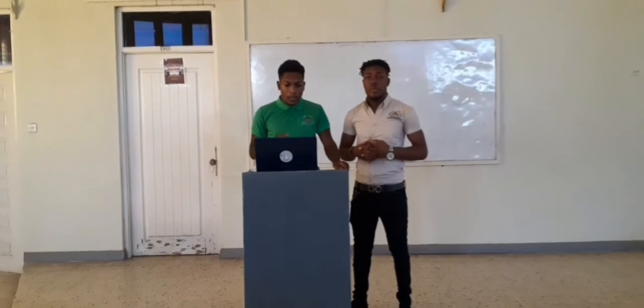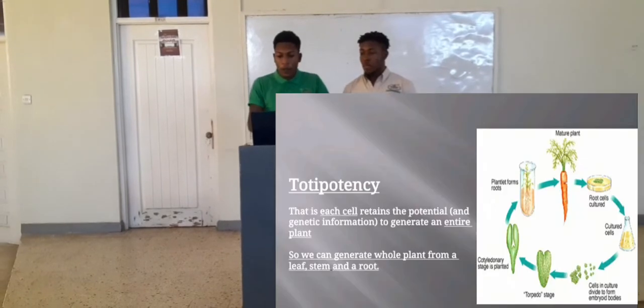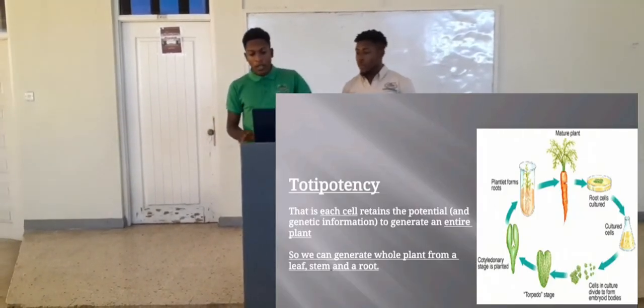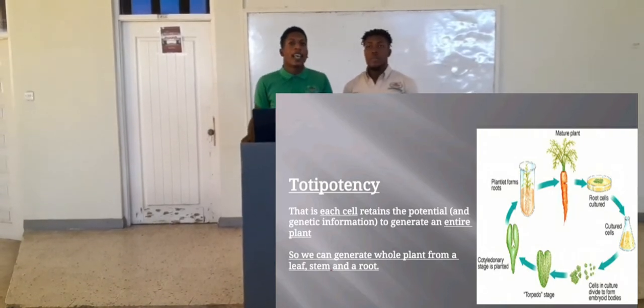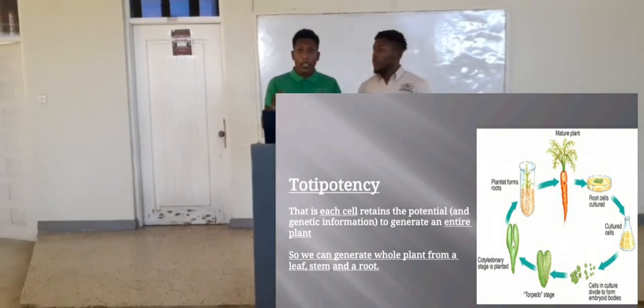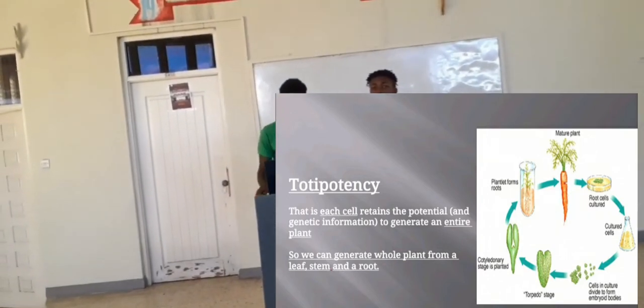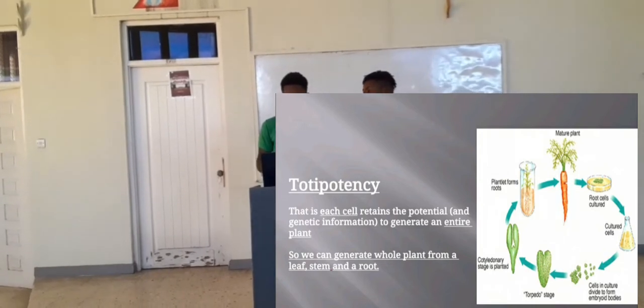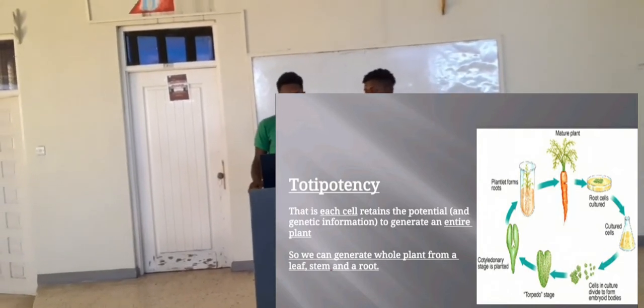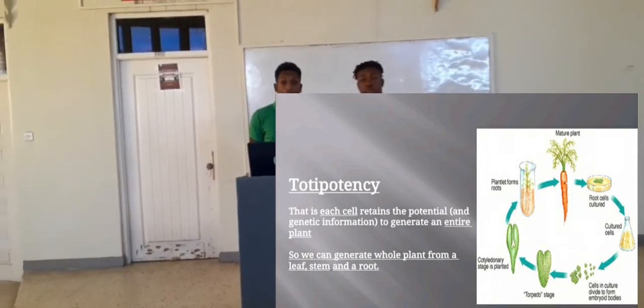Another factor you should know is that asexual propagation is possible because plant cells are totipotent — meaning each cell contains the potential to generate an entire new plant. These cells are taken and cultivated, meaning grown under a controlled environment rather than a natural environment. The cells go through different stages of development, including the embryonic bodies and the torpedo stage, before they are planted.